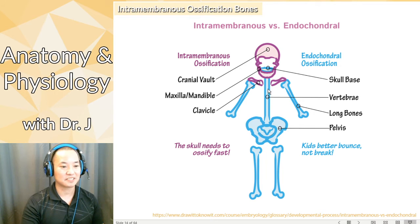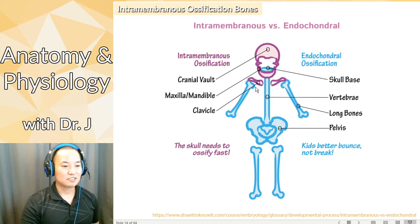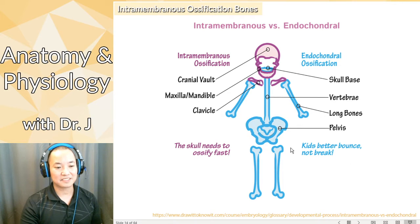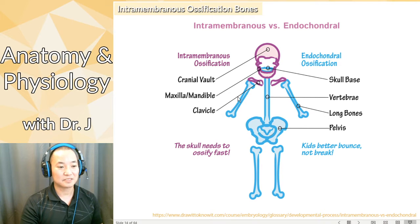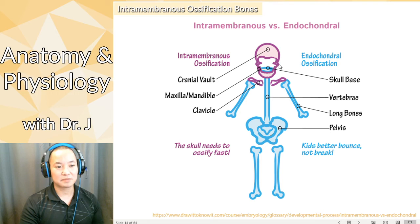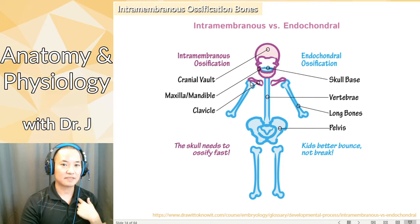But why don't you have fully developed bones everywhere? Because if all of it was calcified and ossified, the woman would have to pass all of that. So again: intramembranous ossification forms most of the flat bones in the skull and the clavicles.